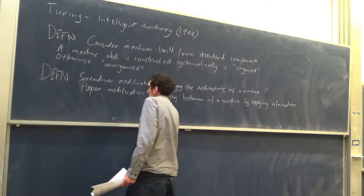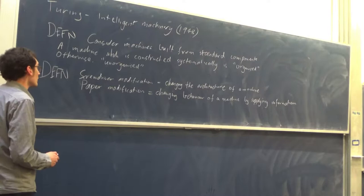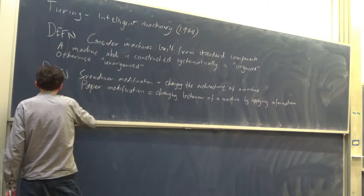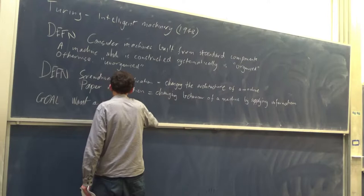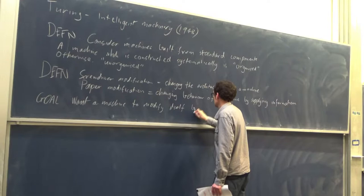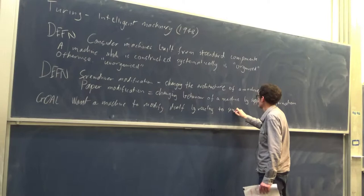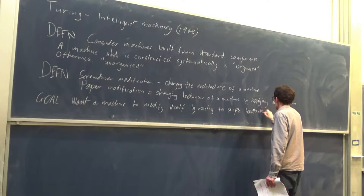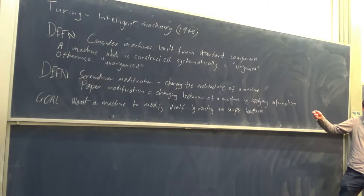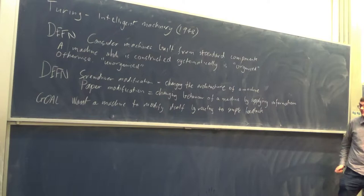The idea Turing is interested in is for a machine to be able to modify itself by being supplied with simple information or simple feedback on what it's doing right and what it's doing wrong. We want it to be simple feedback. We don't want to give it complete information — the exact output string we want — because if we give it that, we may as well just write the program by hand. If we know that information, there's no need for machine learning.